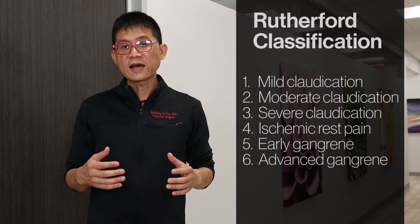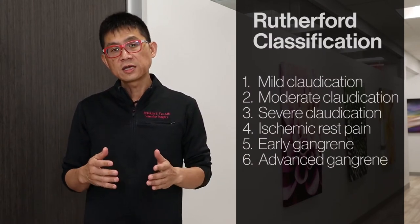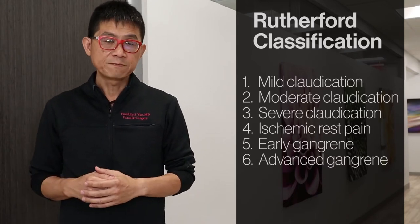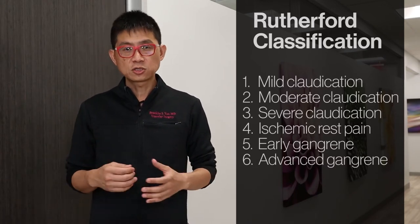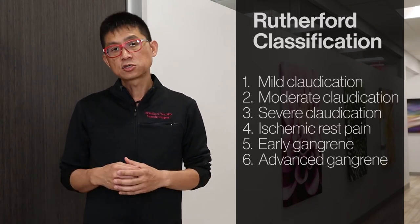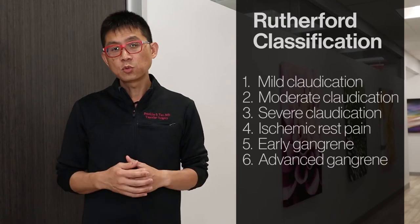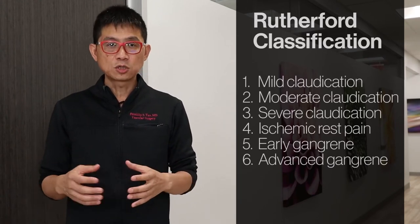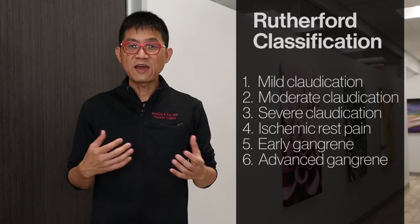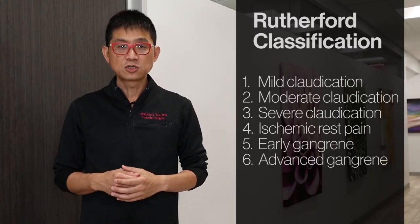Rutherford class 1, 2, and 3 describes mild, moderate, and severe intermittent claudication respectively. Rutherford class 4 describes ischemic rest pain. Rutherford class 5 describes tissue loss with gangrene or a non-healing wound in a foot that is salvageable. And Rutherford class 6 describes advanced tissue loss with gangrene in a foot that is not salvageable.